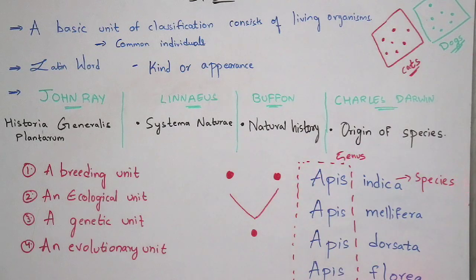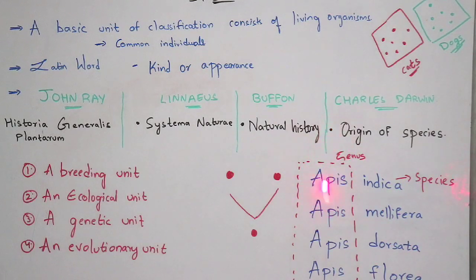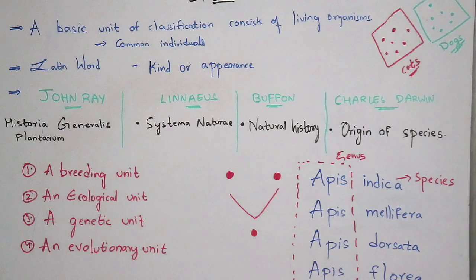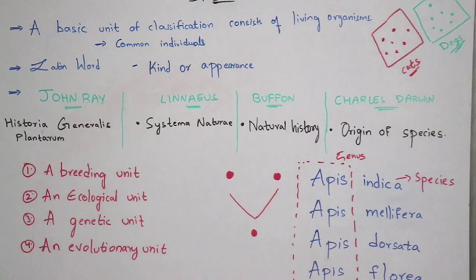If you see here, the species is different for each — indica, dorsata, mellifera, florea — but the genus is the same: Apis. This is one of the characteristics which can be seen in the classification of species.